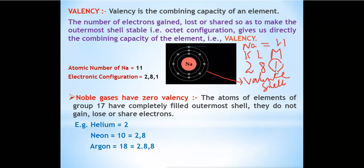In sodium, one electron is present in the outermost shell. Sodium will donate — lose — this electron in order to get a stable octet electronic configuration. If sodium loses one electron, then it will have eight electrons in its new outermost shell and become stable. Since sodium is losing one electron, the valency of sodium is one.